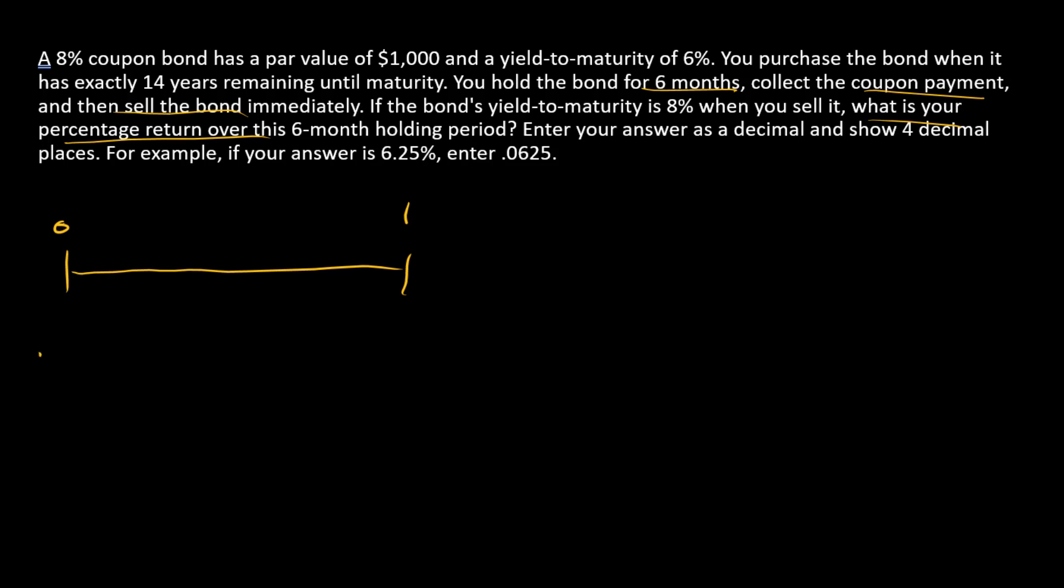At the front end of the timeline, the bond investor is going to purchase the bond for some number we'll call P0. In time one, the bond investor is going to receive a payment and then immediately sell the bond for some other price, and we'll call that P1.